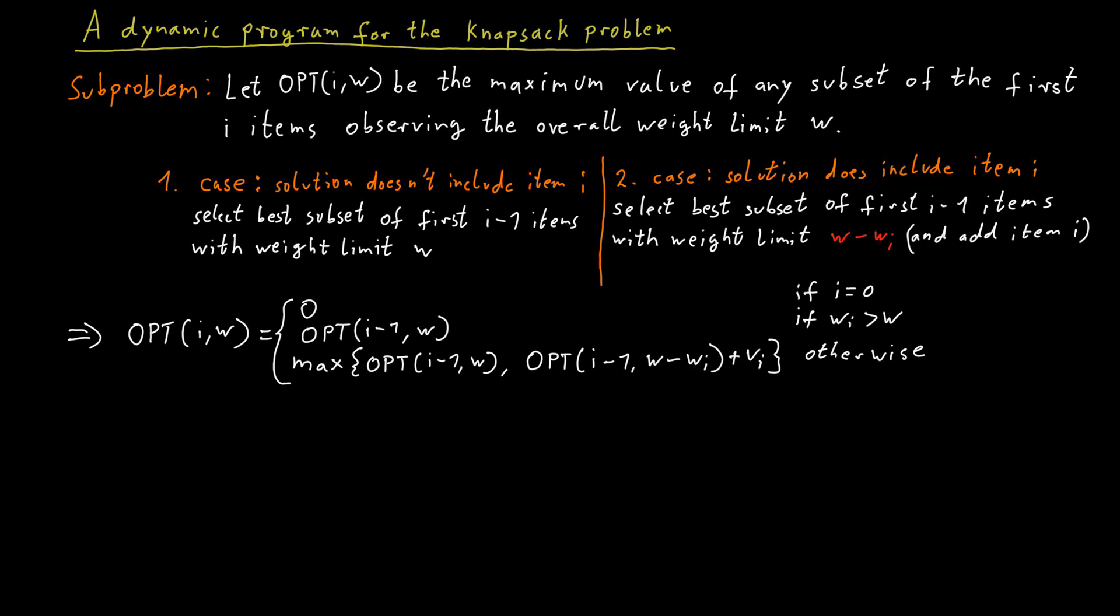One way of thinking about this dynamic program is to picture a big table. And the entries in this table will be the solution to these sub-problems. The rows of the table will be the different possible weight limits. And the columns of the table will be depending on how many of the items I'm allowed to use in my solution.